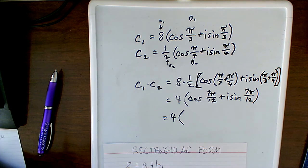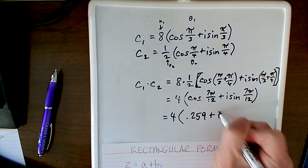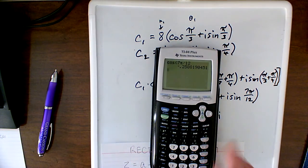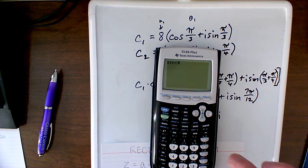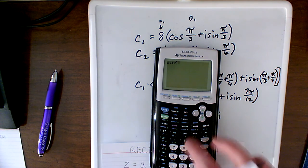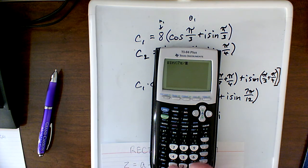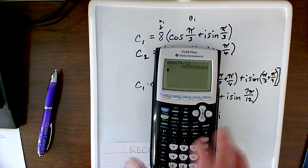I've got point 259 plus i times, and I'm going to do the sine of that same thing. So clear that, sine again, we're going to do 7, second pi divided by 12, and this time I get point 966.